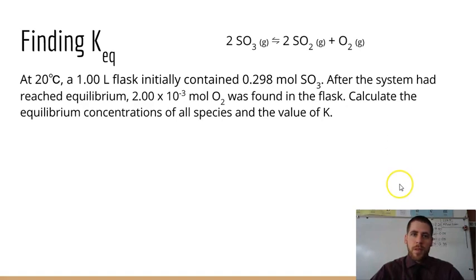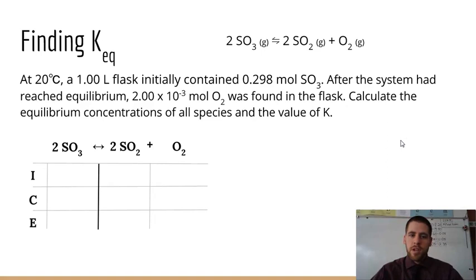All right, so let's just look at a few examples. Here's a balanced equation, and we're given some initial conditions. We have a 1 liter flask containing this many moles. Because it's in 1 liter, then this is essentially our molarity, right? After the system reaches equilibrium, we discover that we have a certain amount of oxygen in our flask. Calculate the equilibrium concentrations of every species and the value of K. Let's start by setting up an ice table. Write out your balanced equation, set up your initial change in equilibrium, and then plug in what we're given. We're starting with 0.298 moles of our reactant, and we're assuming zero product because it doesn't say that we have any product.